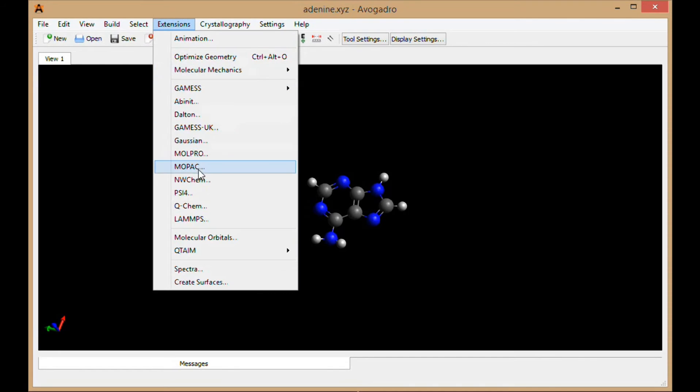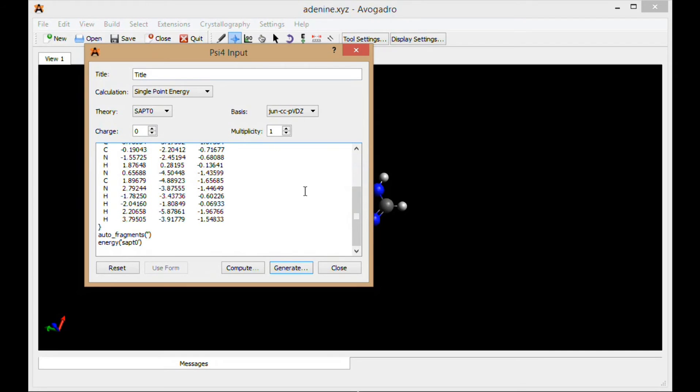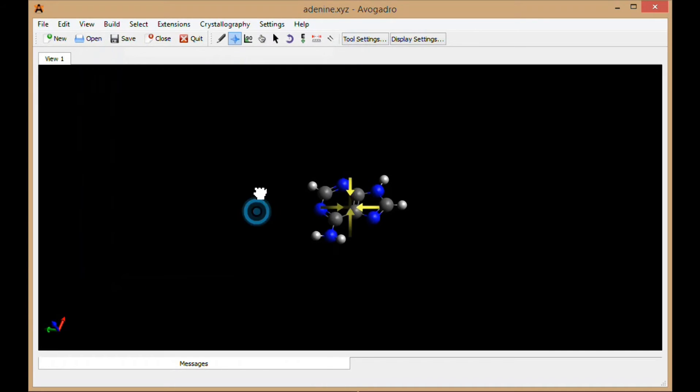So we can see, for example, that there's the actual XYZ coordinates, and Avogadro is rendering those into the structure that I can see there so that I can verify that this is a reasonable structure for adenine.